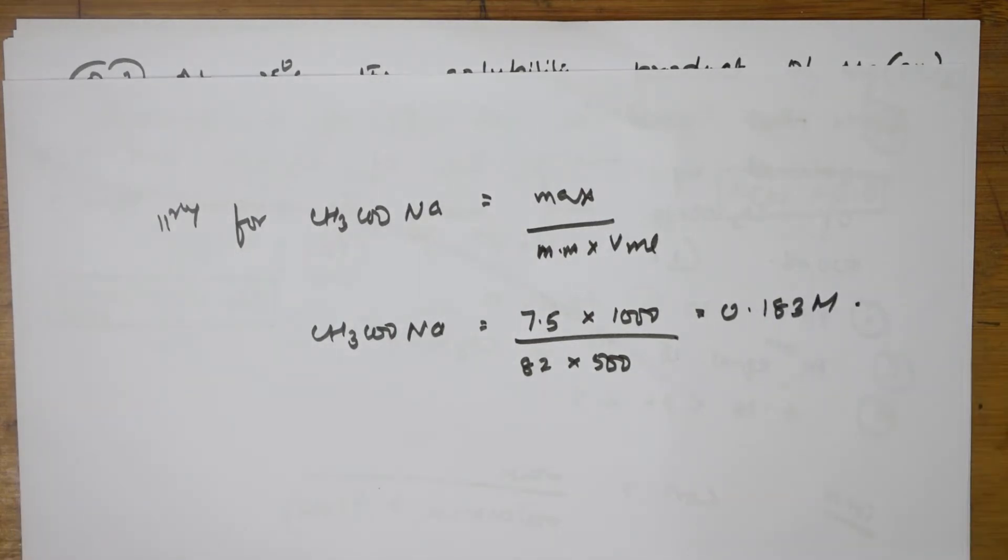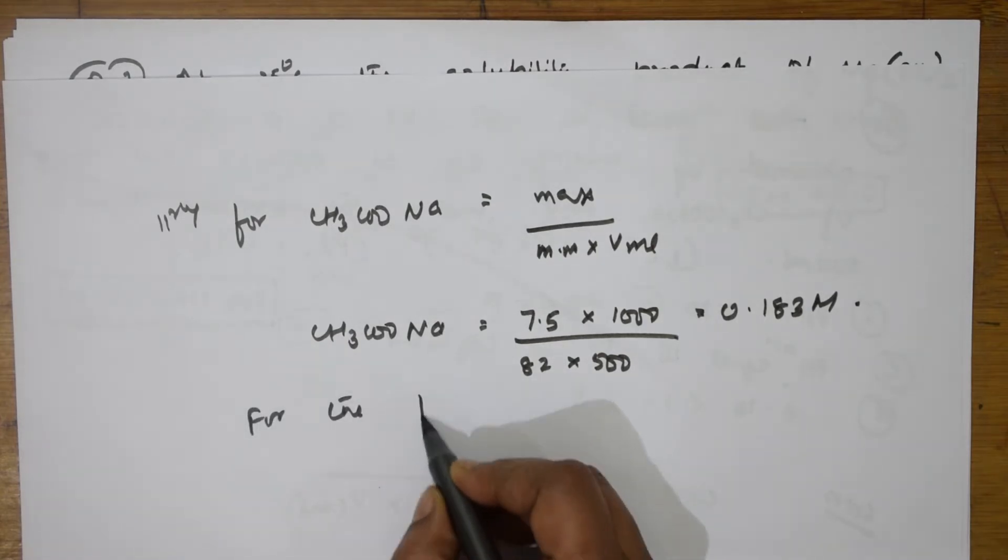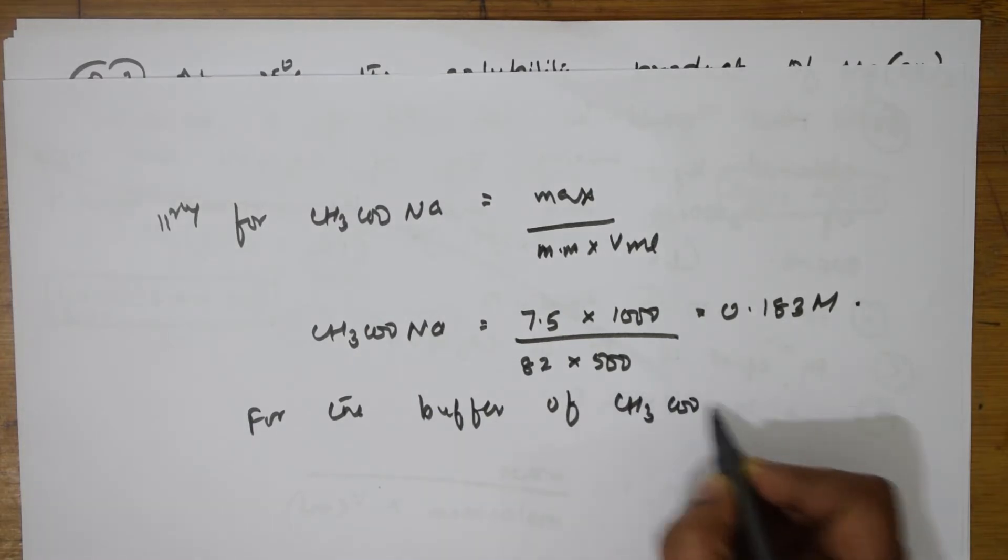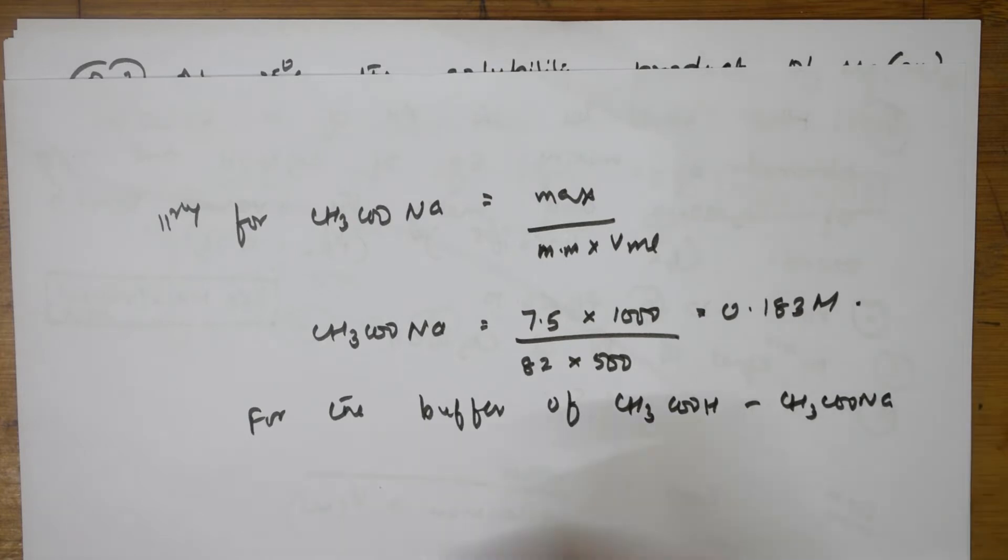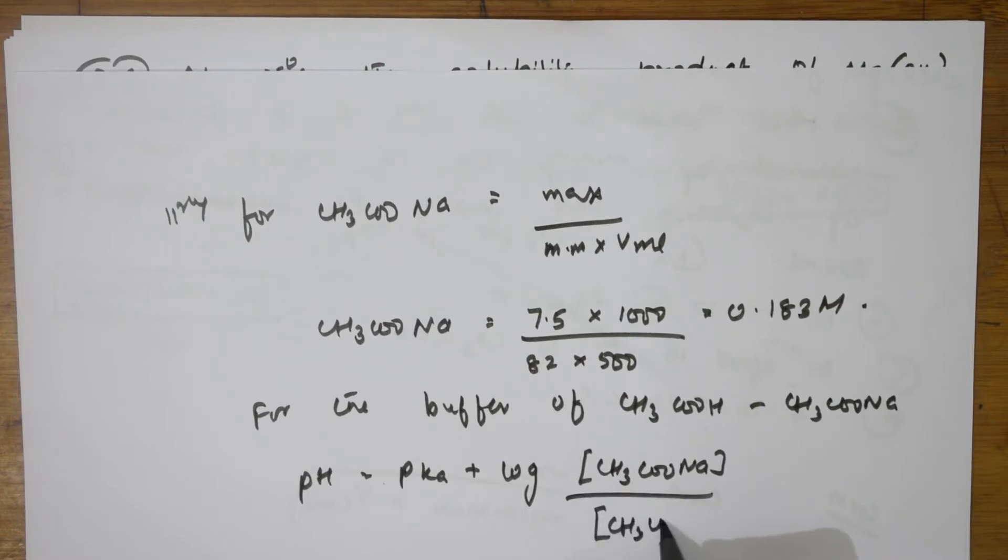Now they asked, for the buffer of this one, I need to find the pH, isn't it? For the buffer of CH3COOH minus, you have done salt of weak acid and weak base. So CH3COONa. Now, pH is equal to pKa plus log of CH3COONa divided by CH3COOH. This formula also we have studied.